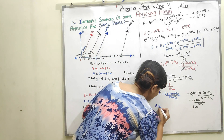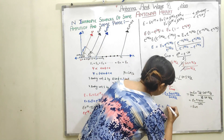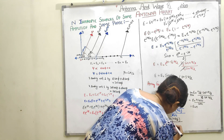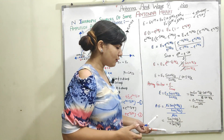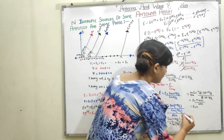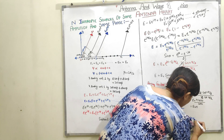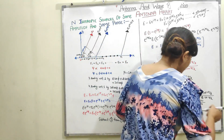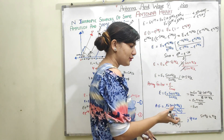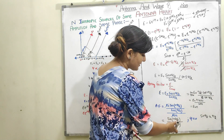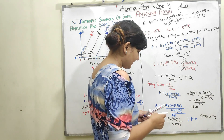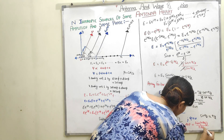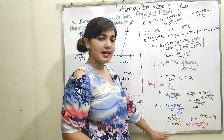When psi is very small (psi ≈ 0), sin(psi/2) is approximately equal to psi/2. Replacing sin(psi/2) with psi/2 gives the approximate array factor. This is how the final array factor is calculated for an N-element isotropic antenna array.